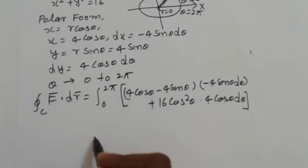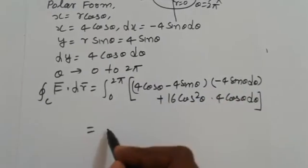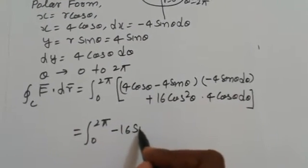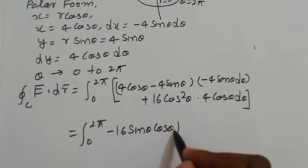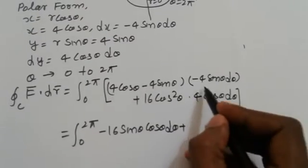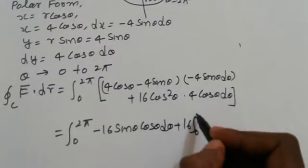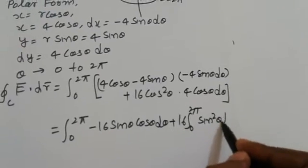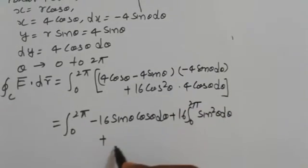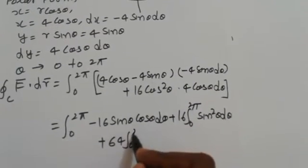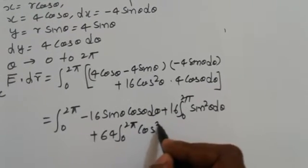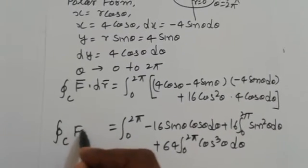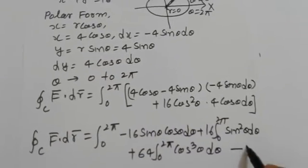After simplifying we get: integral from 0 to 2π of −16 sinθ cosθ dθ, plus integral from 0 to 2π of 16 sin²θ dθ, plus integral from 0 to 2π of 64 cos³θ dθ. This is equation number 4.